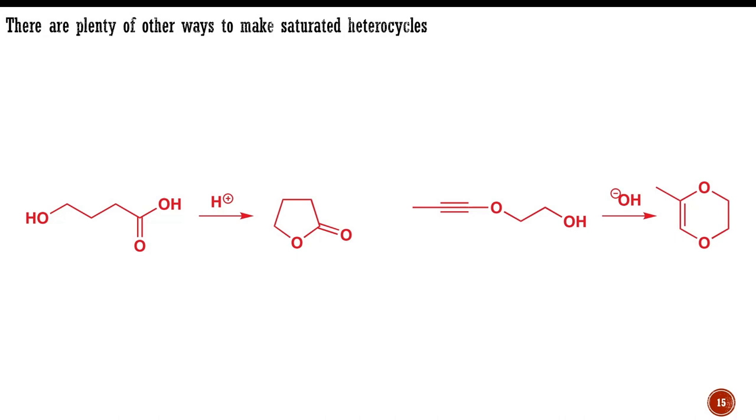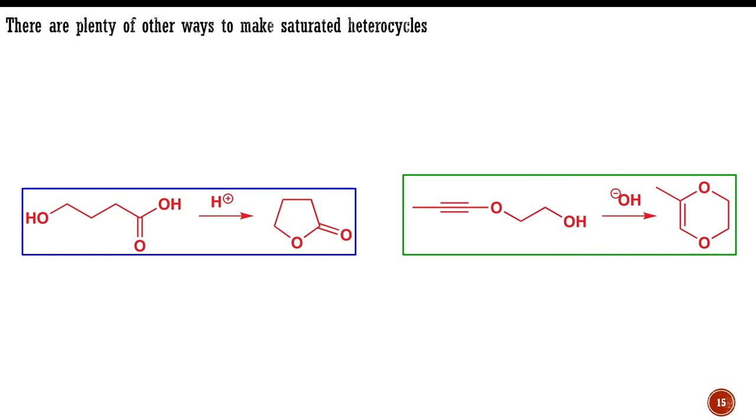Nearly all of the cyclization reactions that we have discussed have been intramolecular SN2 reactions where one end of the molecule acted as the nucleophile displacing the leaving group on the other end. We kept to this sort of reaction in order to make valid comparisons between different ring sizes. But you can imagine making saturated heterocycles in plenty of other ways. Intramolecular substitution at a carbonyl group, for example, such as happens in this lactonization reaction or intramolecular addition of an alkoxide onto an alkyne.